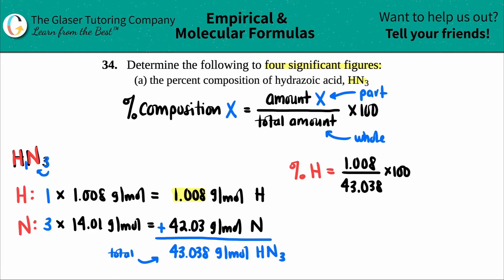And I do the same thing for the nitrogen. Percent nitrogen is its total amount, so in this case it's the 42.03, divided by the entire amount, which is 43.038, and I just multiply by 100. Now when I'm doing my math, I don't like to put in units because I know that they're the right ones. Adding units when you're trying to do the math just gets a little crazy and hectic.